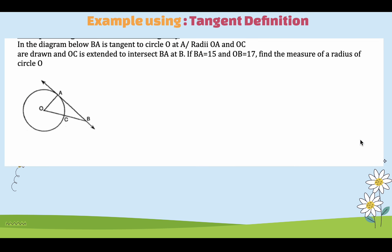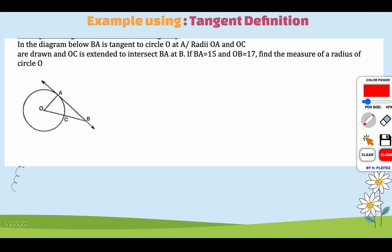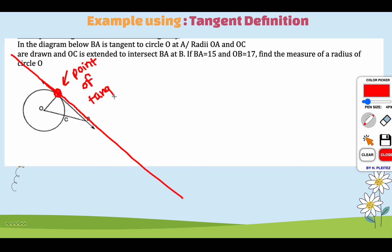We're going to go over an example using that tangent definition. The two biggest parts are: your tangent line touches your circle once — this helps you identify it in a diagram — and it creates a 90-degree angle with the diameter or radius. If you know a tangent line touches the circle one time, you can easily identify that segment OB is not a tangent line, because if you extended this line it would touch our circle two times. With a tangent line, you should be able to extend it indefinitely and there should still only be that one contact point — your point of tangency.